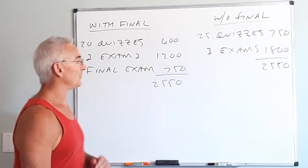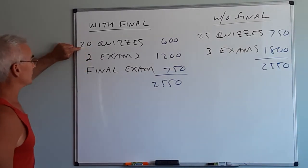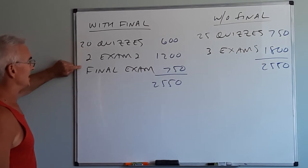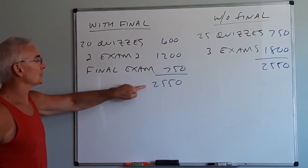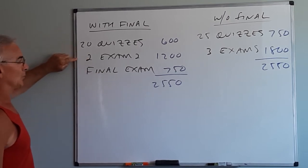If you take the final exam then you will have your top 20 quizzes, your top two exams and the final exam totaling 2,550 because you will drop five quizzes and one exam.